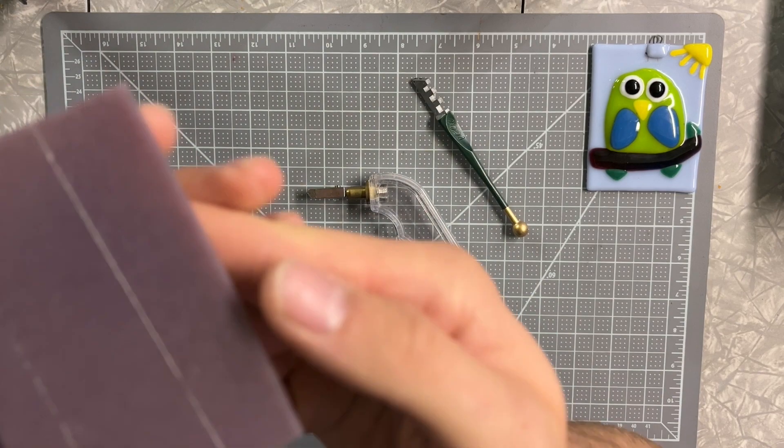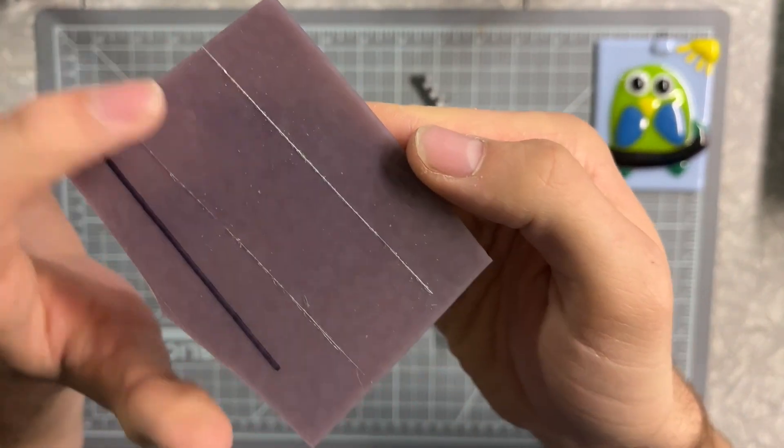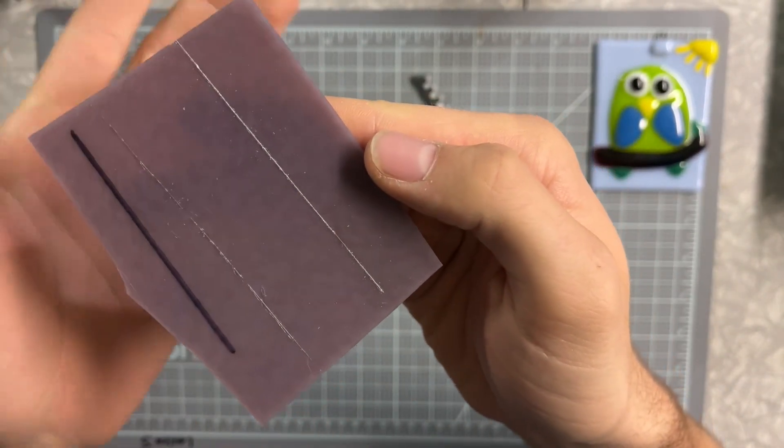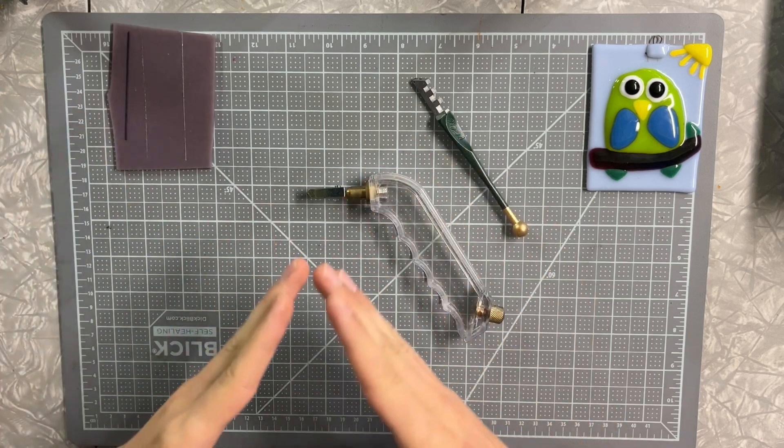I have an example of what it does here. You can see on this piece of sheet glass I have this nice score mark.